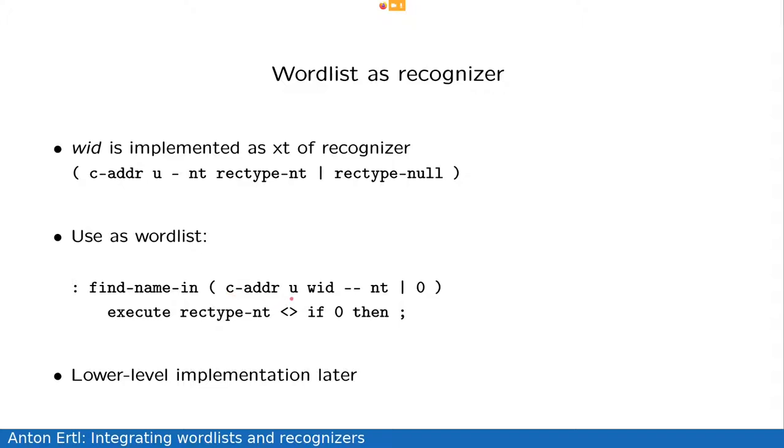So, you pass a string and a wordlist ID, and the wordlist ID is the execution token of a recognizer to find-name-in. So, the first thing that find-name-in does is it executes this wordlist recognizer. And the only problem you now have is that you have this kind of result and not this kind of result. And basically, this code is what turns this kind of result into this kind of result.